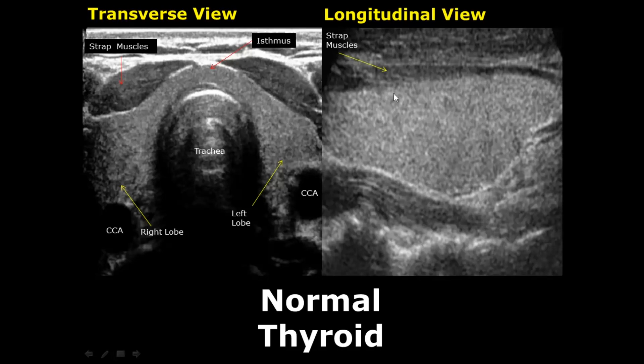These anechoic regions are the common carotid arteries seen in cross-section.